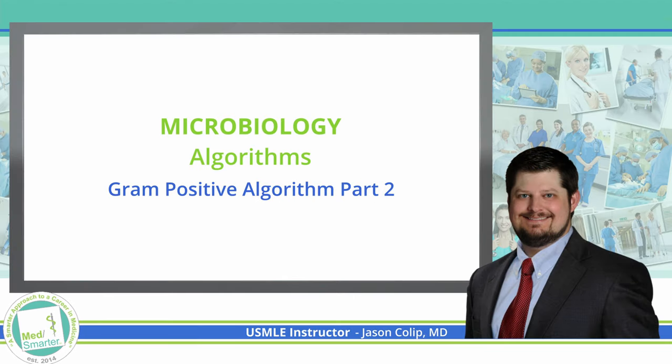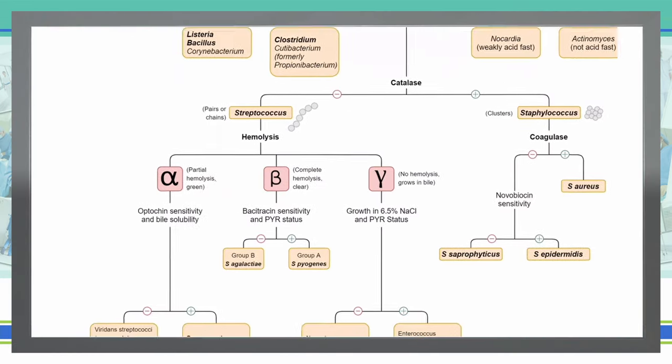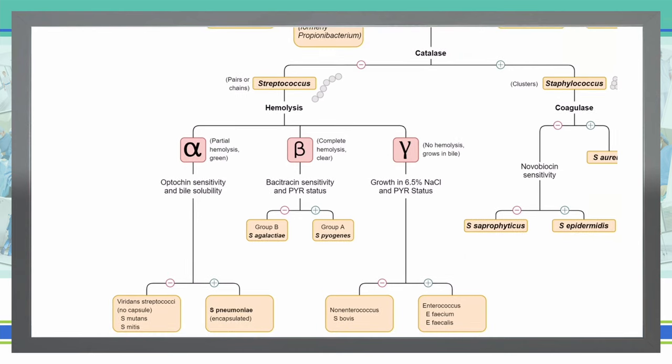Welcome back to Med Smarter, where we're taking a smarter approach to preparing future physicians. Let's continue and say we have an organism that is catalase negative, so it does not break down hydrogen peroxide. That makes it a Streptococcus. We can then grow these organisms on a blood agar plate, and this will help us determine if they are alpha hemolysis, beta hemolysis, or gamma hemolysis. What we'll see with alpha hemolysis is basically a partial hemolysis.